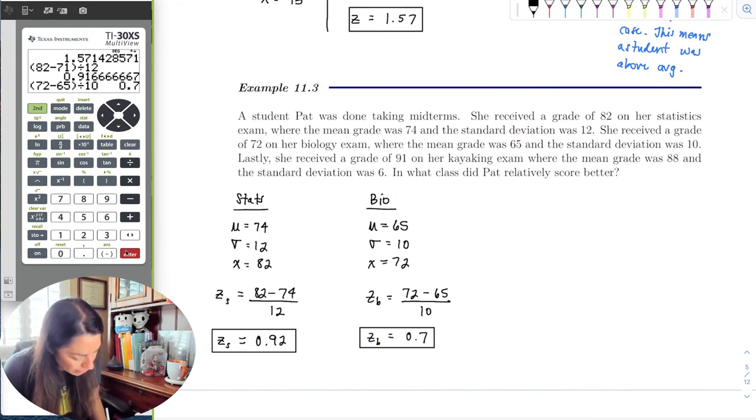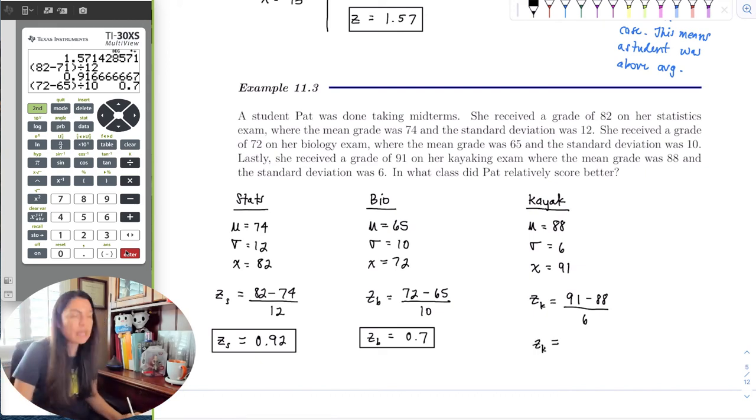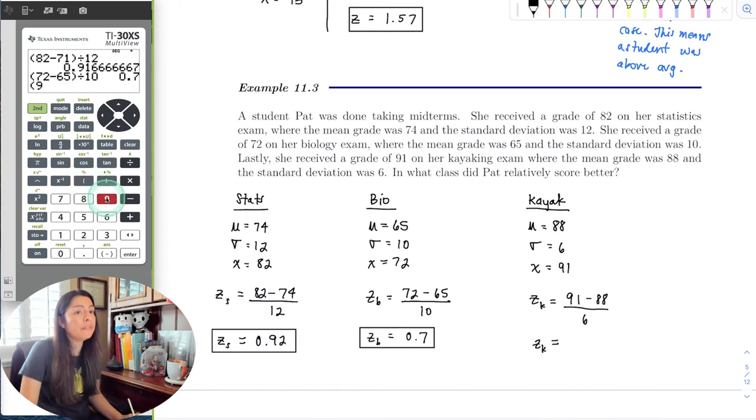Which is awesome, we didn't have to round. And then kayaking. The mean is equal to 88 for kayaking, the standard deviation is 6, and the x value is 91. So the z-score for kayaking will be 91 minus the mean 88 over the standard deviation of 6. There wasn't a lot of spread there in the kayaking exam. It sounds like a really fun class too. Pat was very lucky to have taken it.